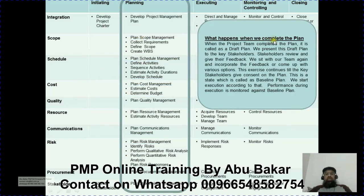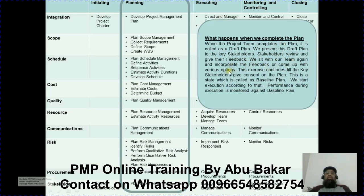When all 24 processes are done under the umbrella of Develop Project Management Plan, the project team completes what is called a draft plan. We present this draft plan to the key stakeholders, who review it and give feedback. We then incorporate the feedback or propose various options, and this exercise continues until key stakeholders give their consent or approval. This approved state is called the baseline plan — a very important term. Execution starts according to this baseline plan, and performance during execution is monitored against it.